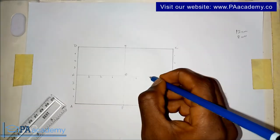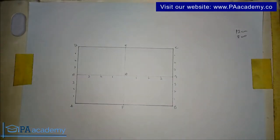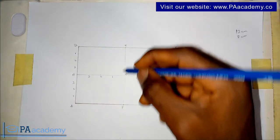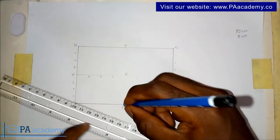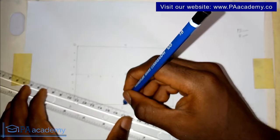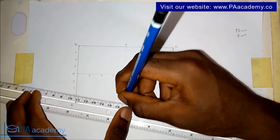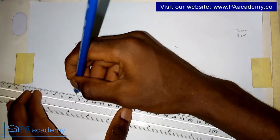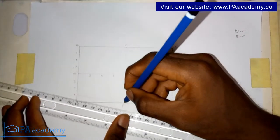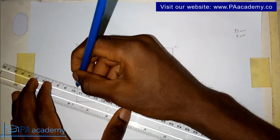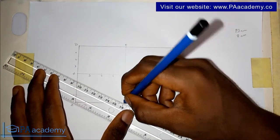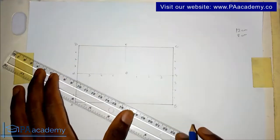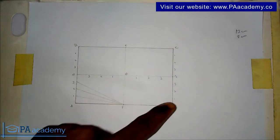You are going to do the same thing on line OG — divide it into four, so because it's 6 centimeters that'll be 1.5 centimeters apart. Here the points will be 1, 2, 3. Now the next thing to do: from point F we are going to draw a line from point F to point 1, then draw a line from point F to point 2, then draw a line from point F to point 3.